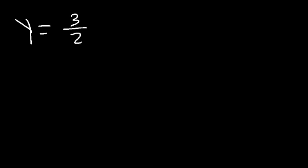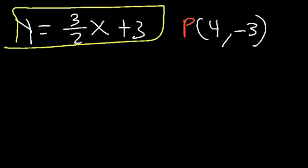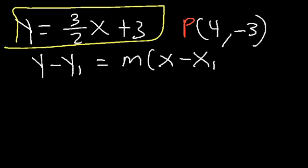Try this example. y is equal to 3 over 2 x plus 3, and the point is 4, negative 3. Go ahead and write the equation of the line that is parallel to this line and passes through the point 4, negative 3. Feel free to write the equation in point-slope form. I'm going to use the point-slope equation, which is y minus y1 is equal to m times x minus x1, and then convert it to slope-intercept form.